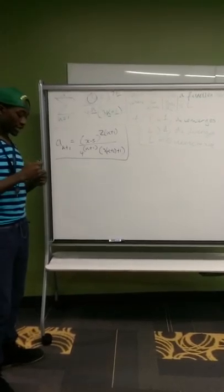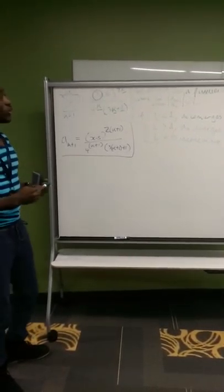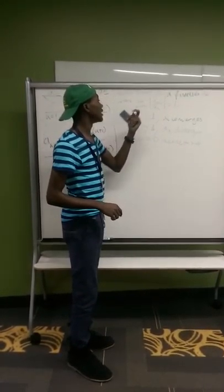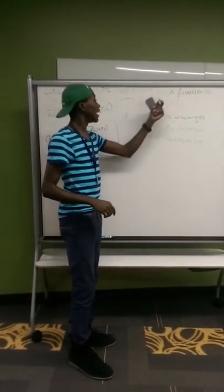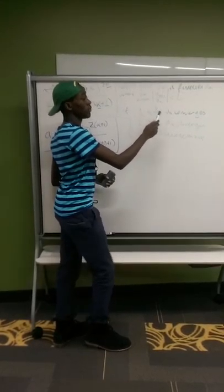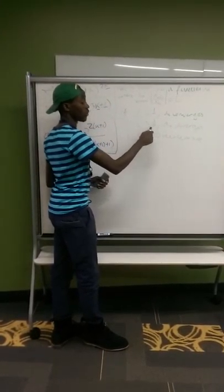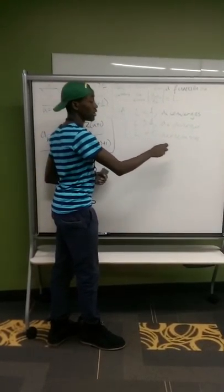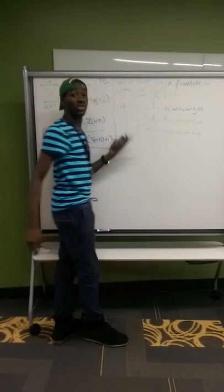What we want to do first is use the ratio test. Now the ratio test says that for a function a_K where the limit of a_K plus 1 over a_K to infinity is equal to L, if the limit is less than 1 then a_K converges. And then limit is equal to 0, the test is inconclusive and you have to do something else.